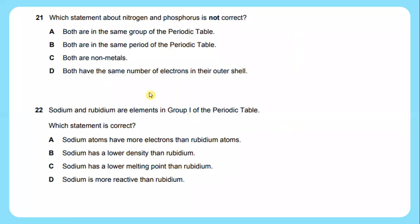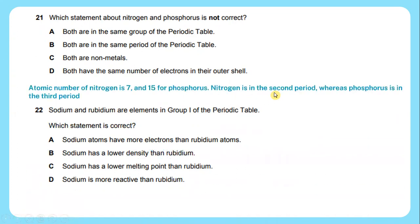Question number 21: which statement about nitrogen and phosphorus is not correct? Atomic number of nitrogen is 7 and 15 for phosphorus. Nitrogen is in the second period whereas phosphorus is in the third period. The answer will be B - both are in the same period of the periodic table.